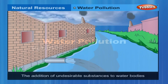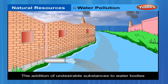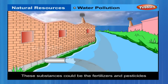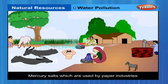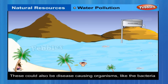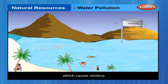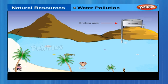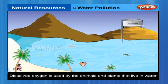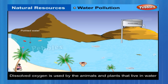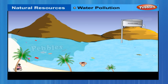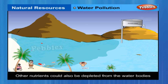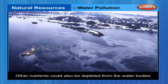Water Pollution involves the addition of undesirable substances to water bodies. These substances could be fertilizers and pesticides used in farming, or poisonous substances like mercury salts used by paper industries, or disease-causing organisms like the bacteria which cause cholera. Water pollution also involves the removal of desirable substances from water bodies. Dissolved oxygen is used by the animals and plants that live in water, and any change that reduces the amount of this dissolved oxygen would adversely affect these aquatic organisms. Other nutrients could also be depleted from the water bodies.